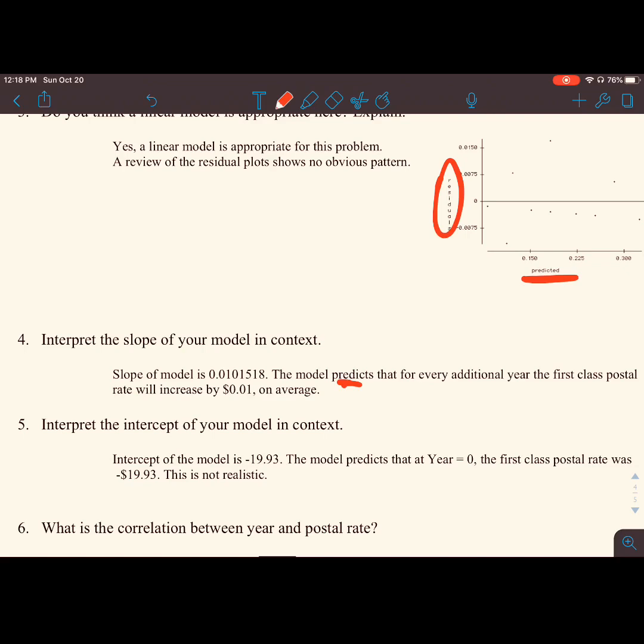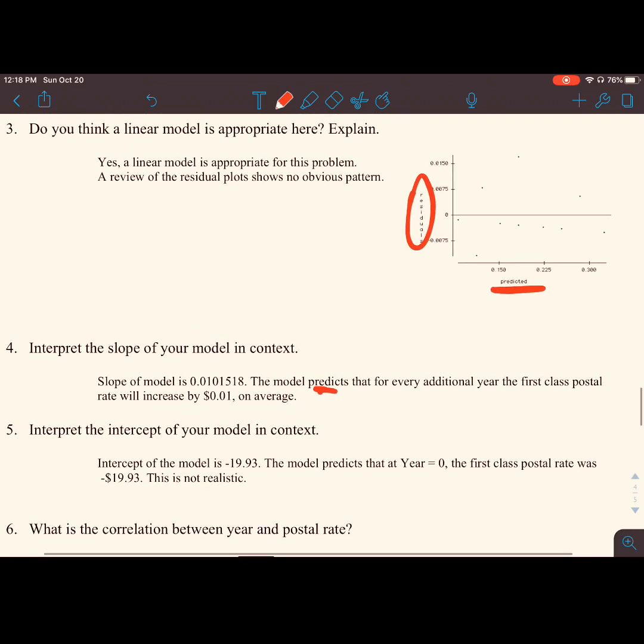If we interpret the intercept of our model, the intercept is negative 19.93. The model predicts that at year zero, the year of our Lord zero when Jesus was born, the first class postal rate was negative 19.93 dollars. Of course, how does one receive 20 dollars back by taking in stamps? This number is not realistic. We still report it, and then we go forth.